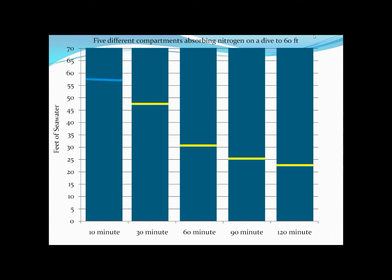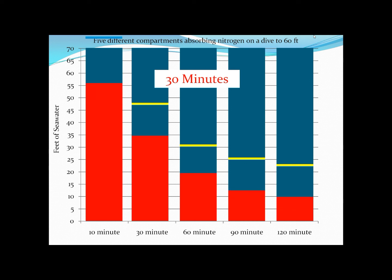For a dive to 60 feet, the 10-minute compartment will never reach its M value, but one of the other compartments whose M values are below 60 feet will become controlling. After 30 minutes the 30-minute compartment is halfway, at 30 feet of seawater on a 60-foot dive. After 60 minutes, the 60-minute compartment — which has a 30-foot M value — reaches its M value and becomes the controlling compartment. The NDL for a dive to 60 feet with this model is 60 minutes.